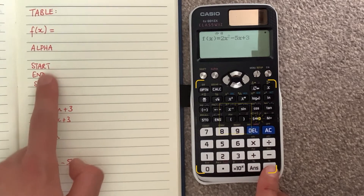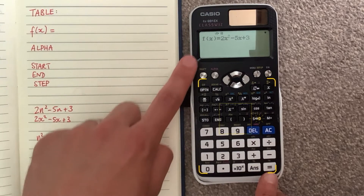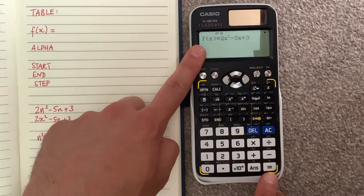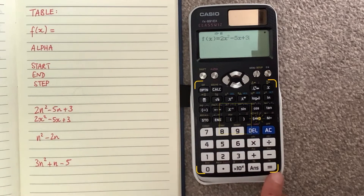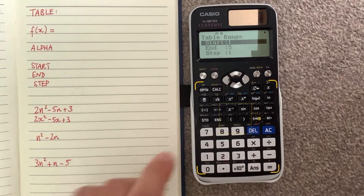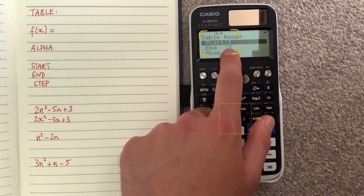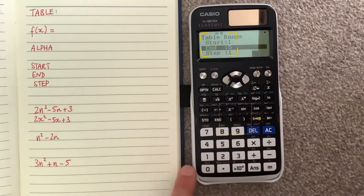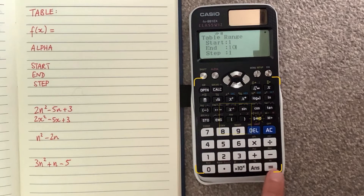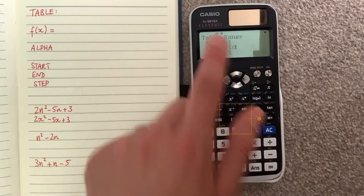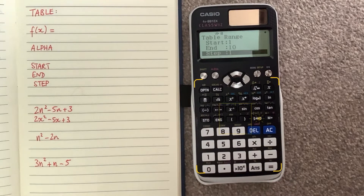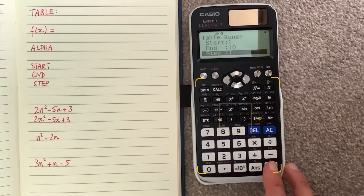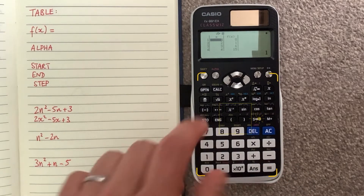Press equals and it gives options for start, end, and step. Sometimes it also asks for g(x) — if you don't want a second function, just press equals again to skip it. Set the start to 1 (substituting n=1), the end to 10 (to get the tenth term), and the step to 1 (going up one at a time: 1, 2, 3, 4...). Then press equals and the calculator does all the substituting for you.